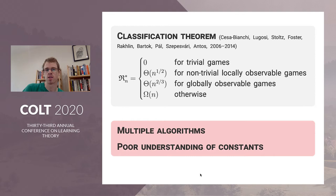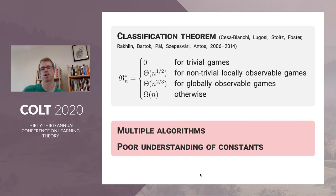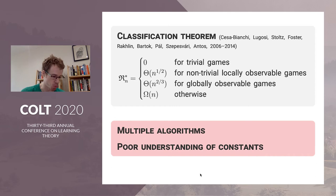So this is all nailed down, but the problem is there are multiple different algorithms and these big-O notations hide constants that are arbitrarily large. They depend on the game matrices — the loss matrix and the signal matrix — and even for fixed k or fixed number of outcomes, these constants can be arbitrarily large. These algorithms are quite complicated, a little bit hard to tune, and it's hard to gain intuition about what's really important.